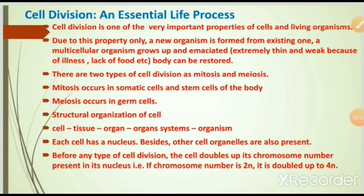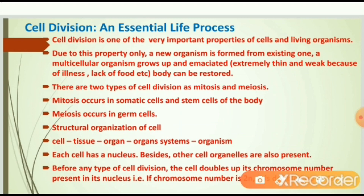Cell division is one of the very important properties of a cell and living organism. Due to this property, a new organism is formed from an existing one, a multicellular organism grows up, and an emaciated body — extremely thin and weak because of illness or lack of food — can be restored. There are two types of cell division: mitosis and meiosis. Mitosis occurs in somatic cells and stem cells; meiosis occurs in germ cells, that is sperm and ovum.